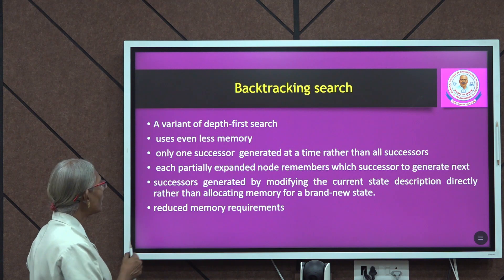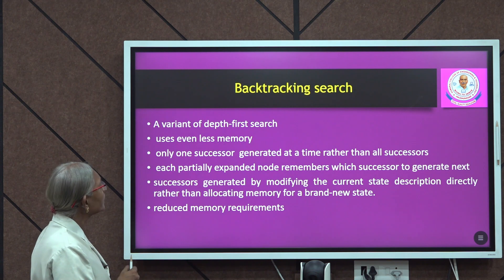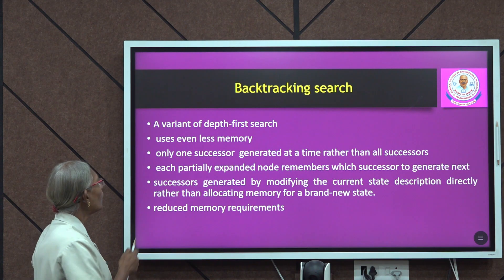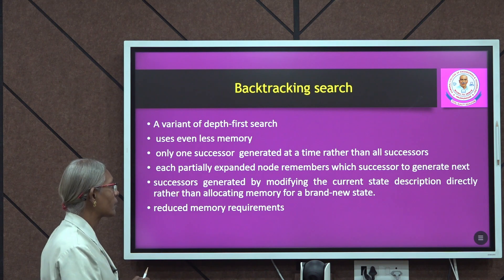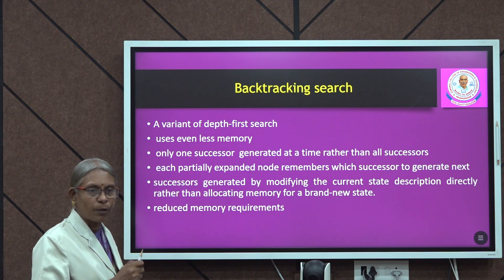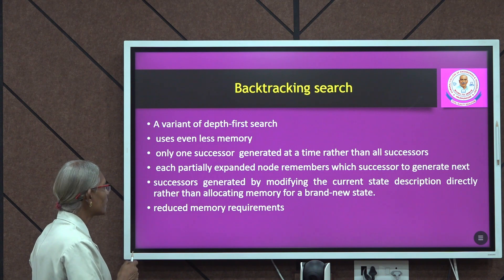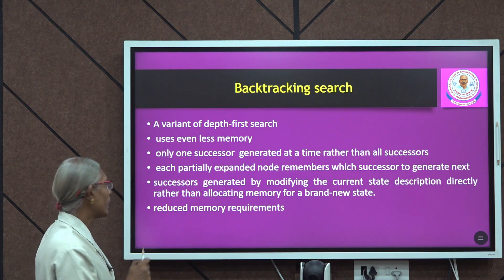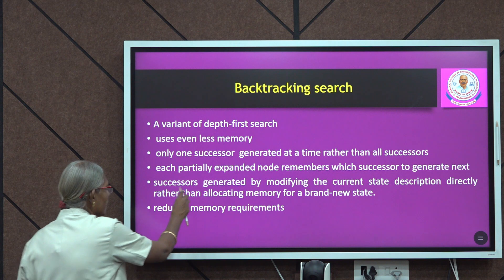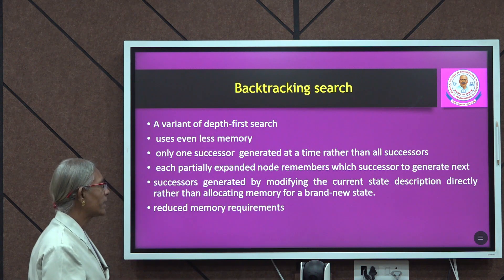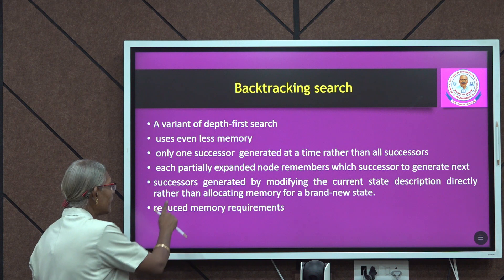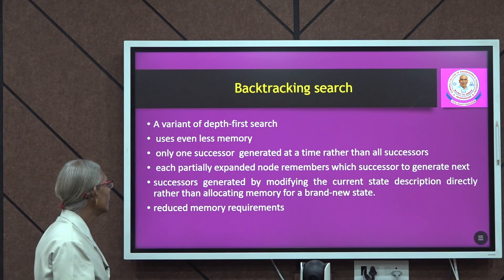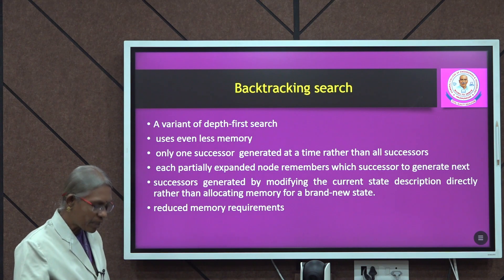Backtracking search is simply a variant of depth-first search that uses less memory. Only one successor is generated at a time instead of exploring all successors. Each partially expanded node remembers which successor to generate next. Successors are generated by modifying the current state description rather than allocating memory for an entirely new state, so memory requirements are greatly reduced.